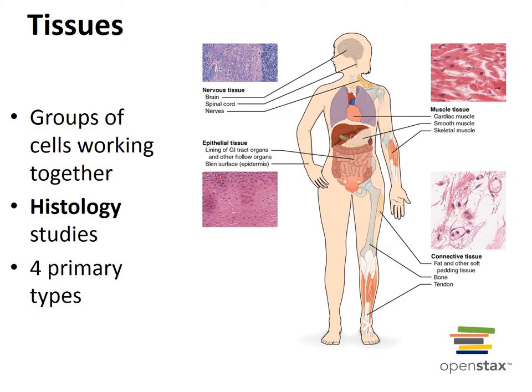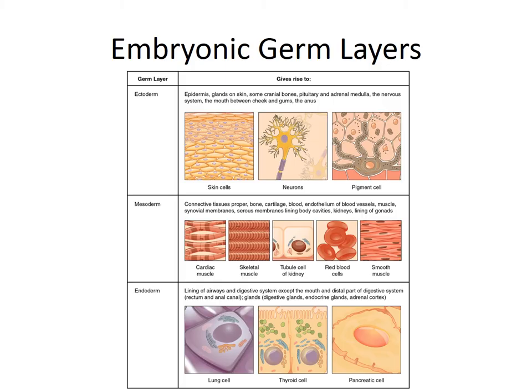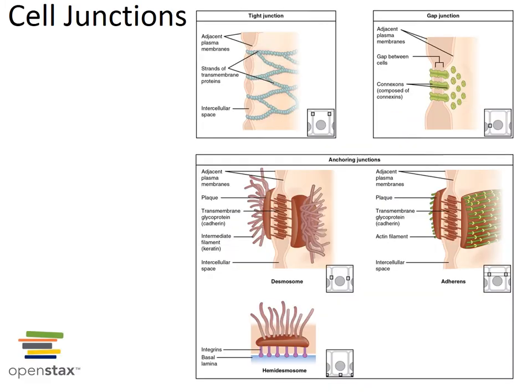There are three types of embryonic germ layers from which all adult tissues are derived. Endoderm gives rise to the functional linings of the digestive and respiratory tracts, as well as accessory glands and organs like the liver, stomach, and pancreas. Mesoderm gives rise to the skeletal, muscular, and circulatory systems. Ectoderm gives rise to the epidermis of the skin and all components of the nervous system.